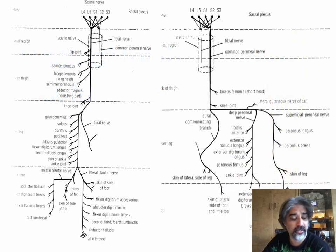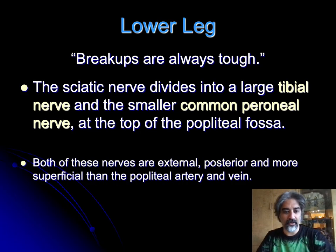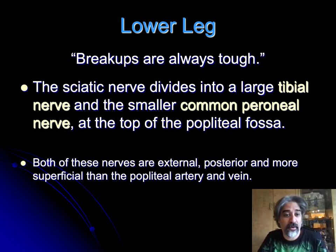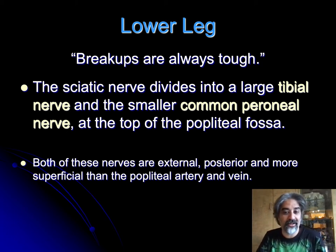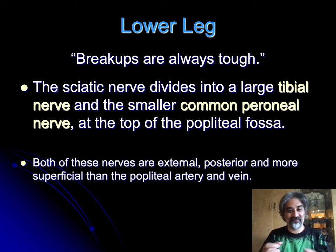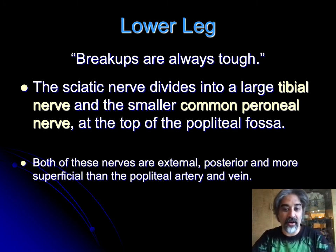Now we're going to be in the leg, which means past the knee. The sciatic nerve divides into a large tibial nerve and the smaller common peroneal nerve at the top of the popliteal fossa. Both of these nerves are external, posterior, and more superficial than the popliteal artery and vein. So the sciatic nerve is a common nerve sheath containing both the tibial and the peroneal — now we're going to get into where they break up.